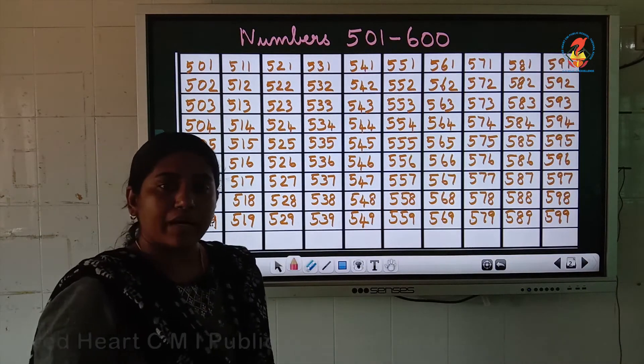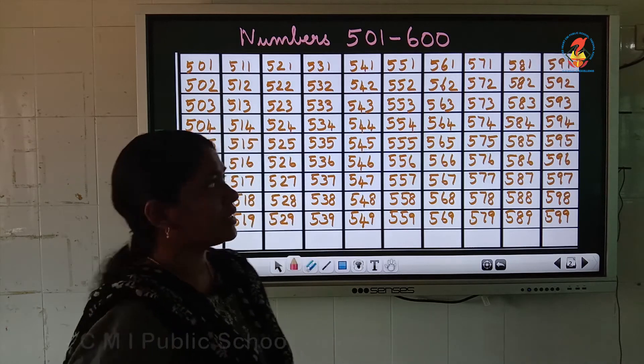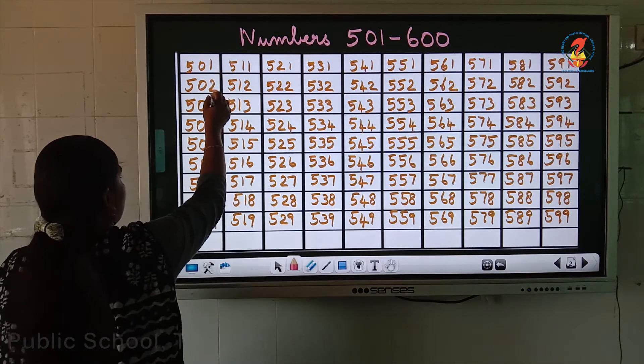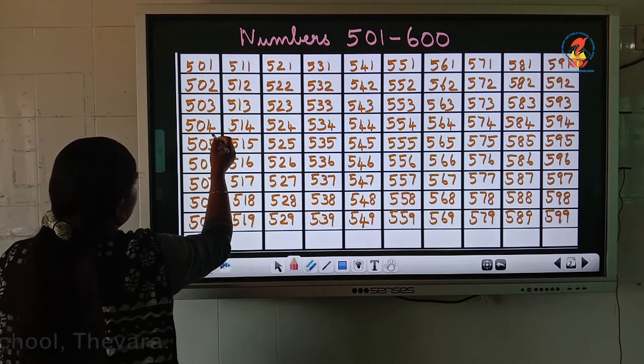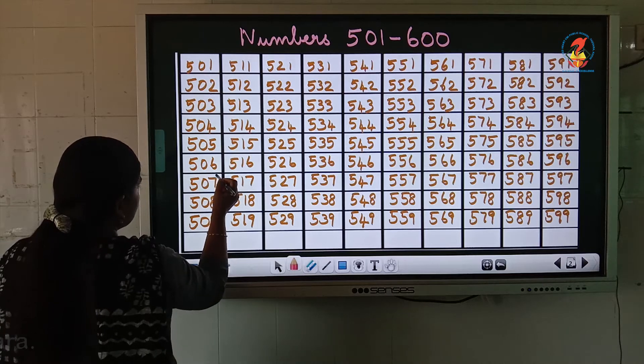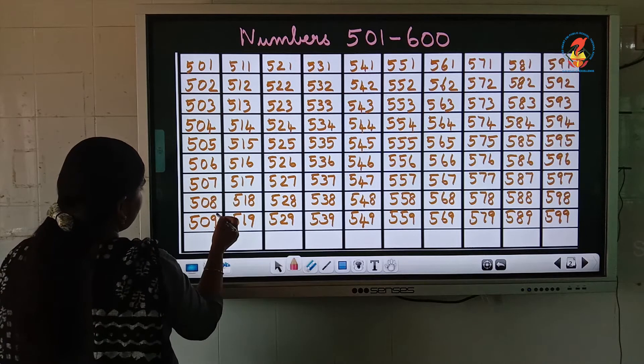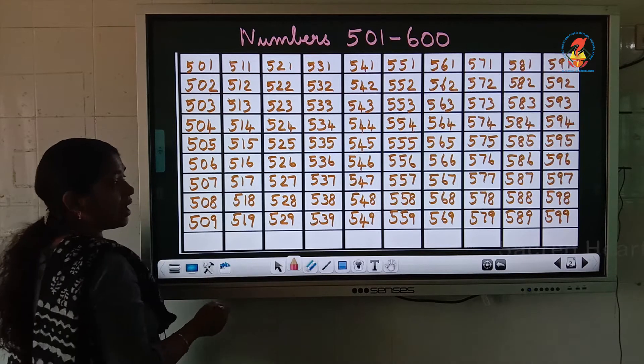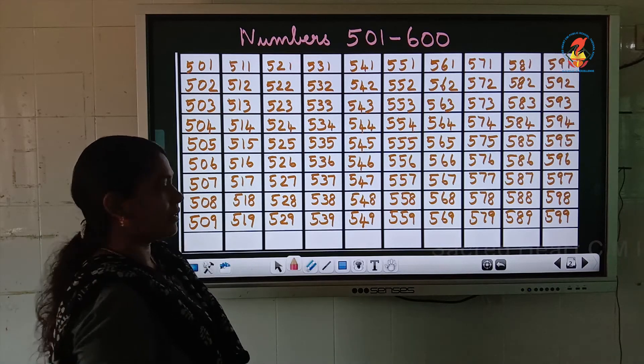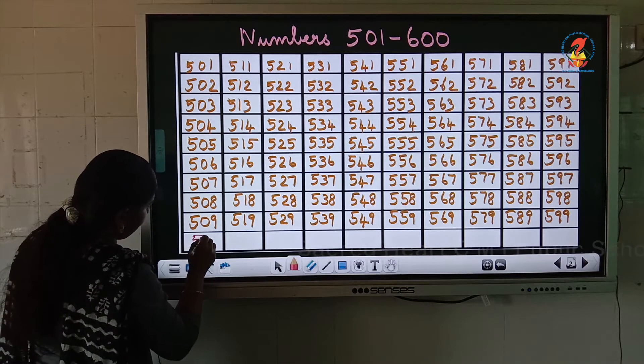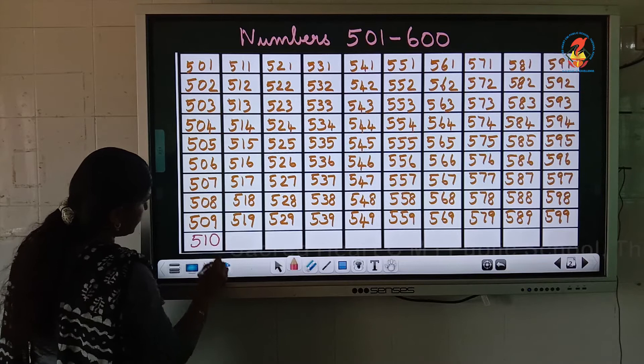So, after 500 which number comes first? 501, then 502, 503, 504, 505, 506, 507, 508, 509. After 509, 510. How we will write 5, 1, 0.